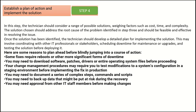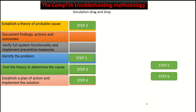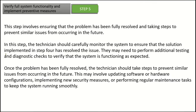After that, we move to step five: verify full system functionality and implement preventive measures. This step involves ensuring that the problem has been fully resolved and taking steps to prevent similar issues from occurring in the future. The technician should carefully monitor the system to ensure the solution from step four has resolved the issue, and may need to perform additional testing and diagnostic checks. Once resolved, they should take steps such as updating software or hardware configuration, implementing new security measures, or performing regular maintenance tasks to keep the system running smoothly.